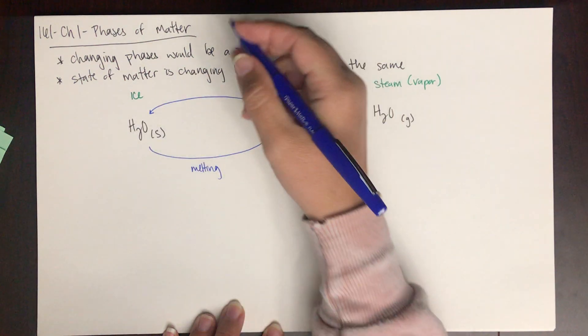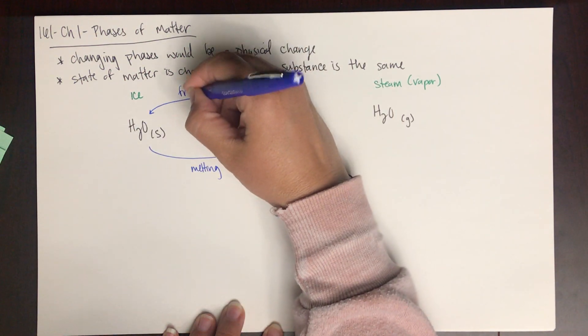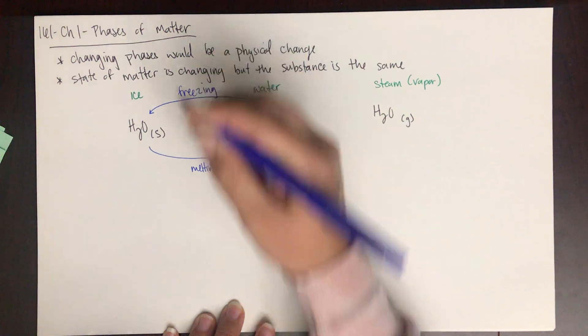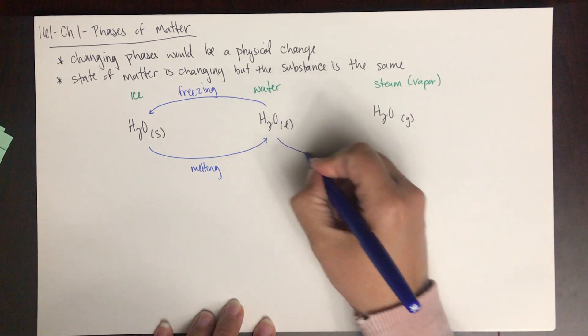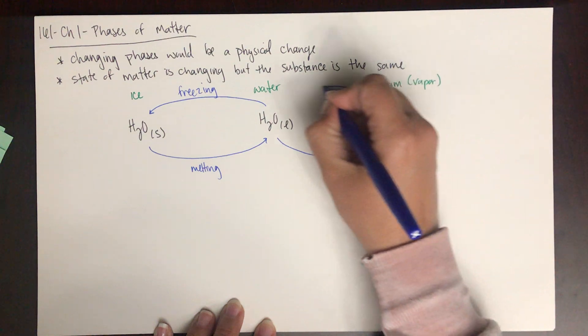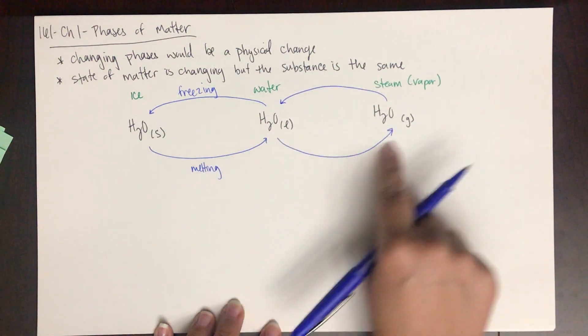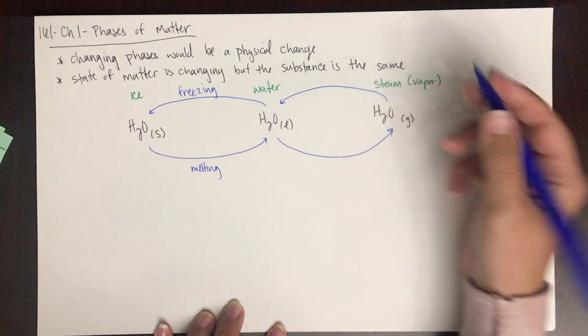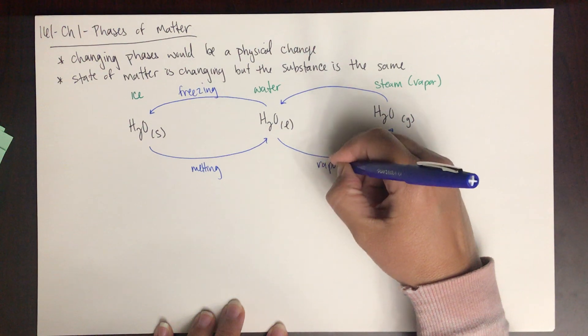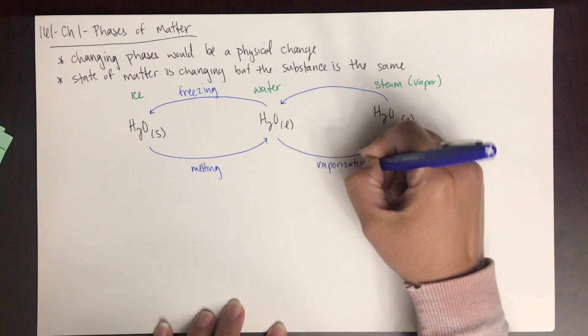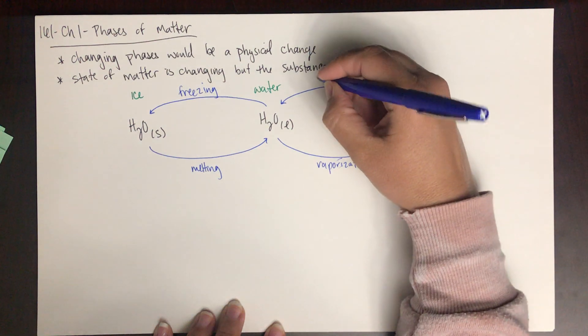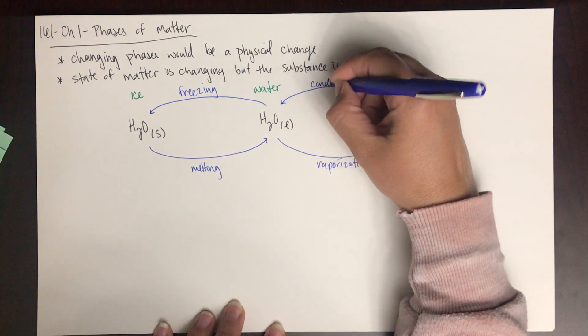When we go from a liquid to a solid, this is freezing. When we go from a liquid to a gas, this is called vaporization. When we go from a gas to a liquid, this is called condensation.